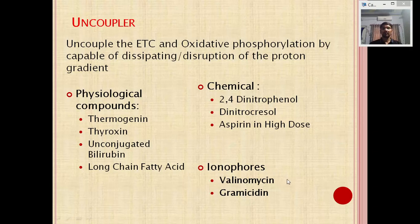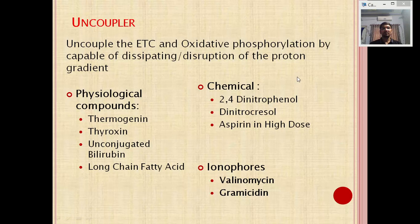Chemical uncouplers include 2,4-dinitrophenol, dinitrocresol, and high doses of aspirin. Drugs like valinomycin and gramicidin also act as uncouplers by incorporating into the inner mitochondrial membrane and producing proton channels, thereby disrupting the proton gradient and preventing Complex 5 from synthesizing ATP.